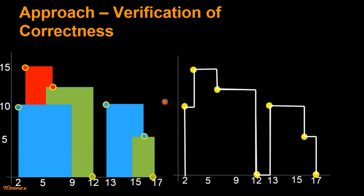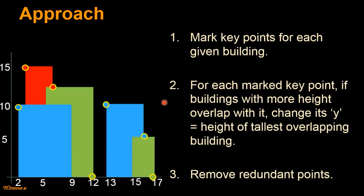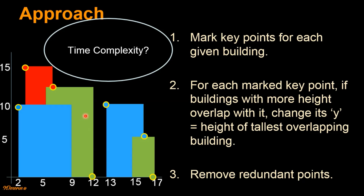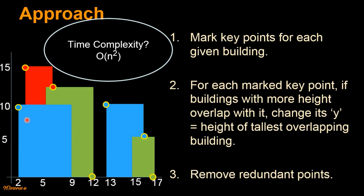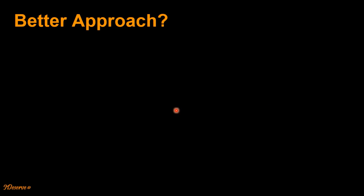Now for the approach we just saw, let's analyze the time complexity. In this approach, we need to look at the position of each building for each critical point. That makes the time complexity of this approach O(n²), where n is the total number of buildings. Now let's try to see if there is any better approach to solve this problem.